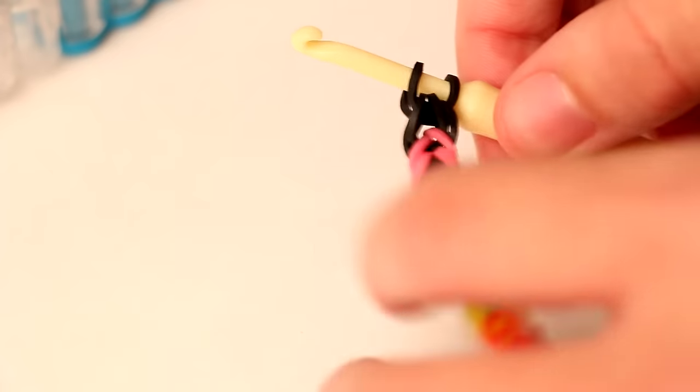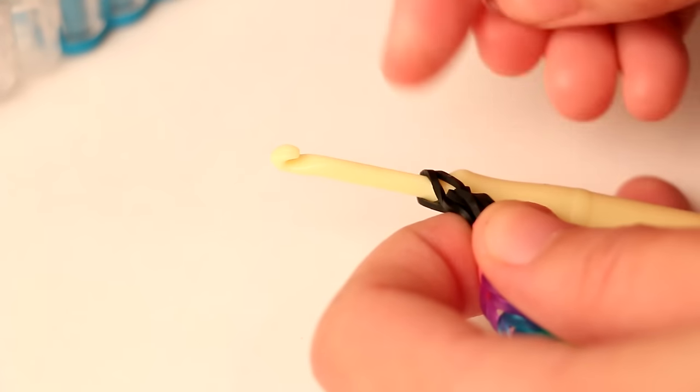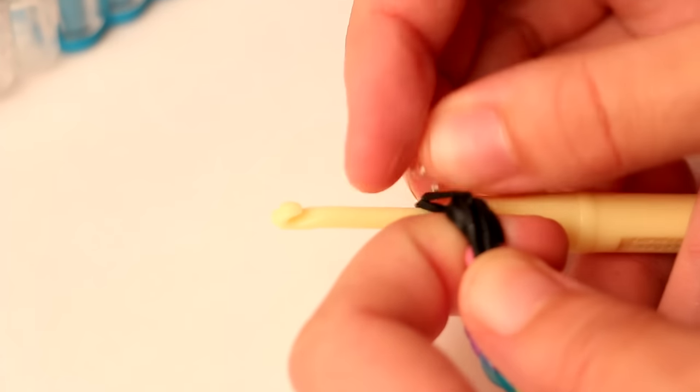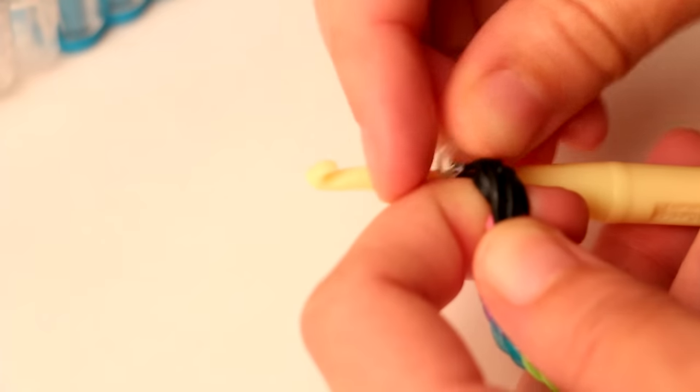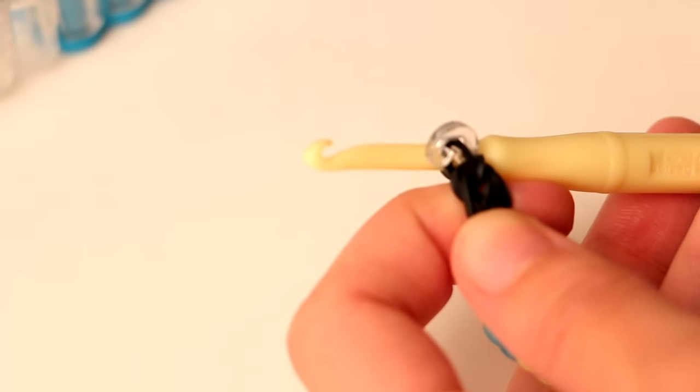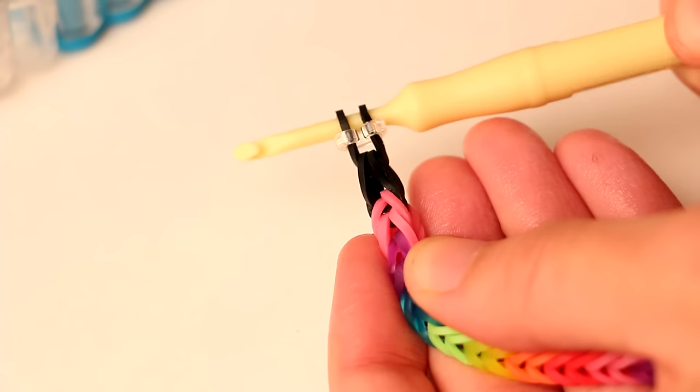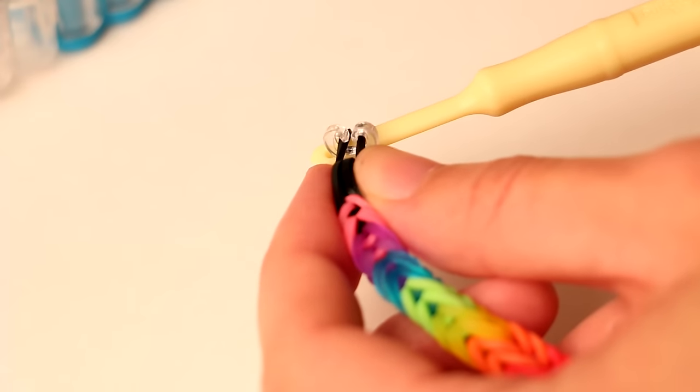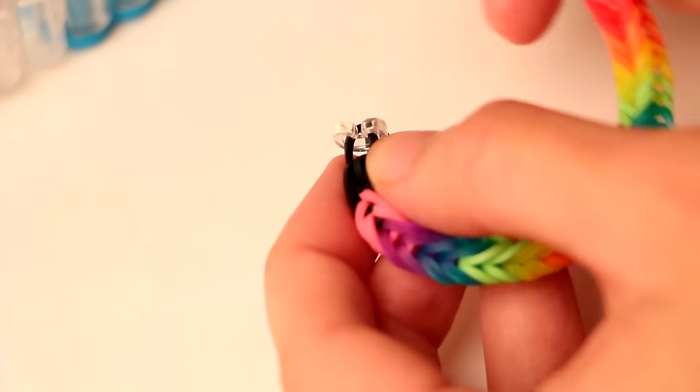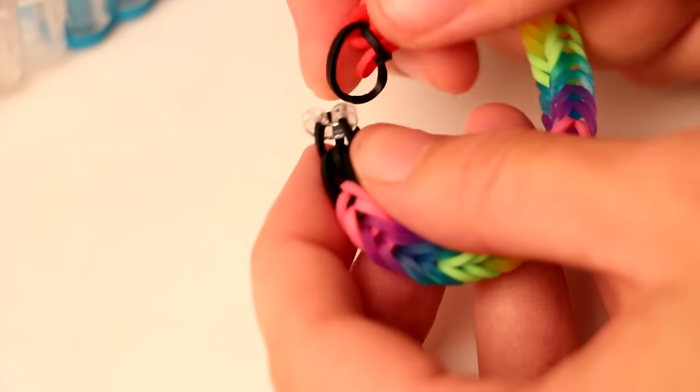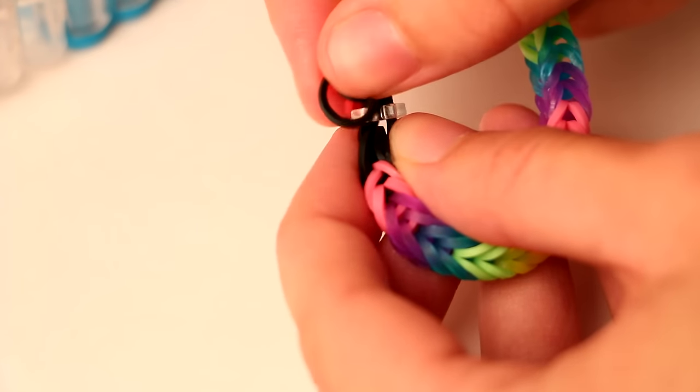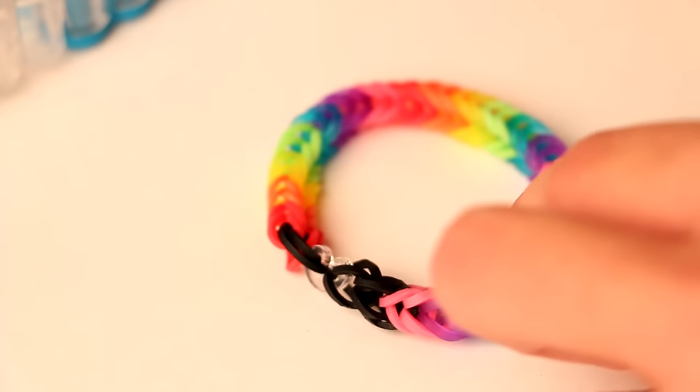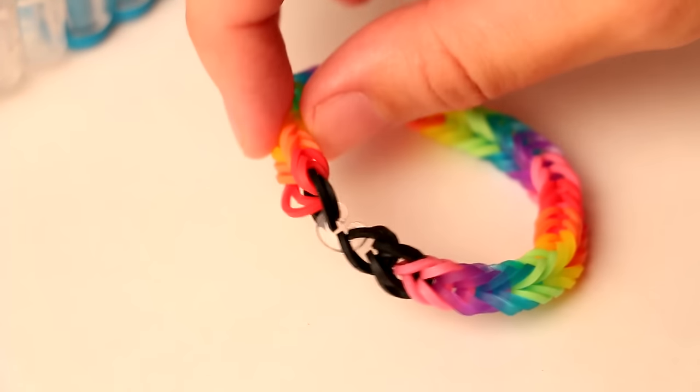Grab your c-clip and kind of stretch it so it's a little easier to put your c-clip on to the bracelet. So now the c-clip is attached to the bracelet. Take your hook out and then you can attach the other end of your bracelet to the c-clip. So there we have our bracelet.